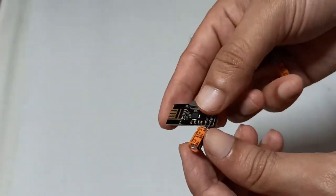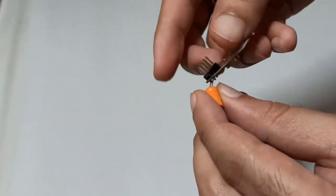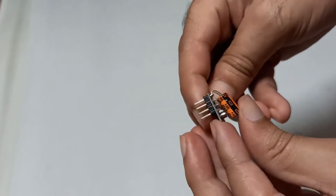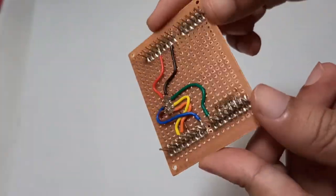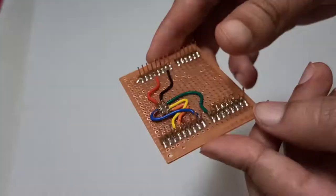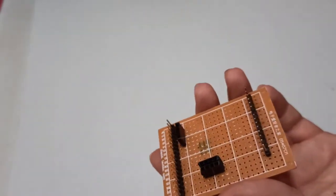For stable communication, connect a 47 microfarad capacitor in parallel to the supply of RF modules like this. If there is any confusion, please take the help of schematic. Final receiver PCB will look like this.